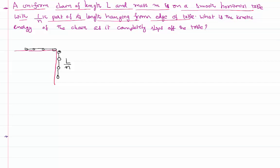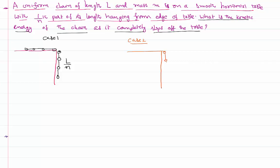We need to calculate the kinetic energy of the chain when it completely slips off from the table — that is, shifting from case 1 to case 2, where the chain is about to slip and only the last bit is in contact with the table. I will solve this using energy conservation: kinetic energy equals work done, which equals the change in potential energy since there is no loss of energy.